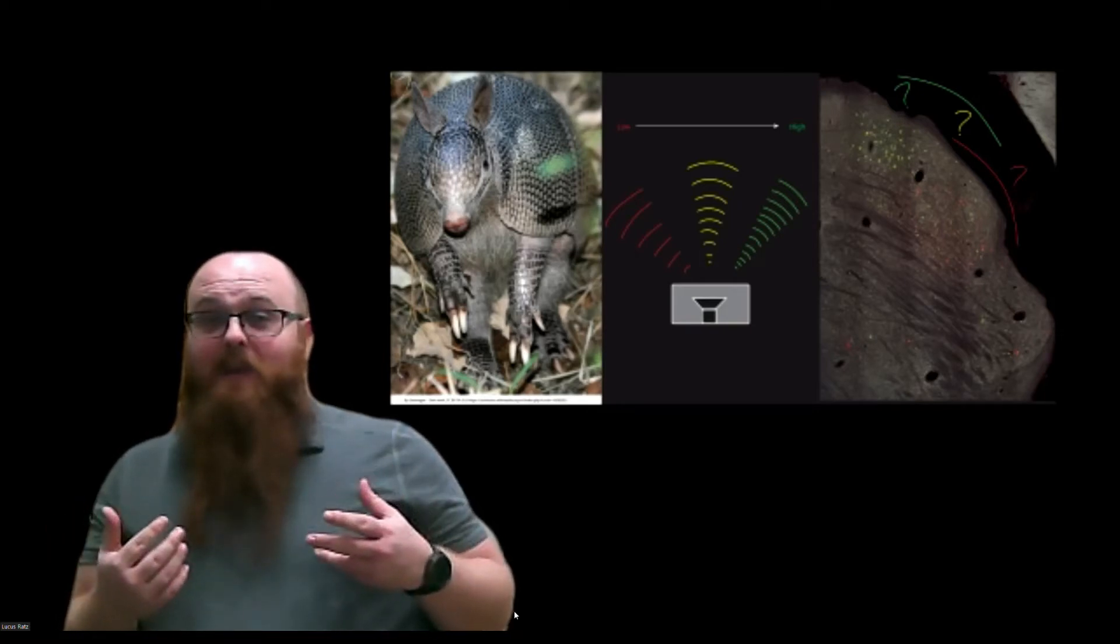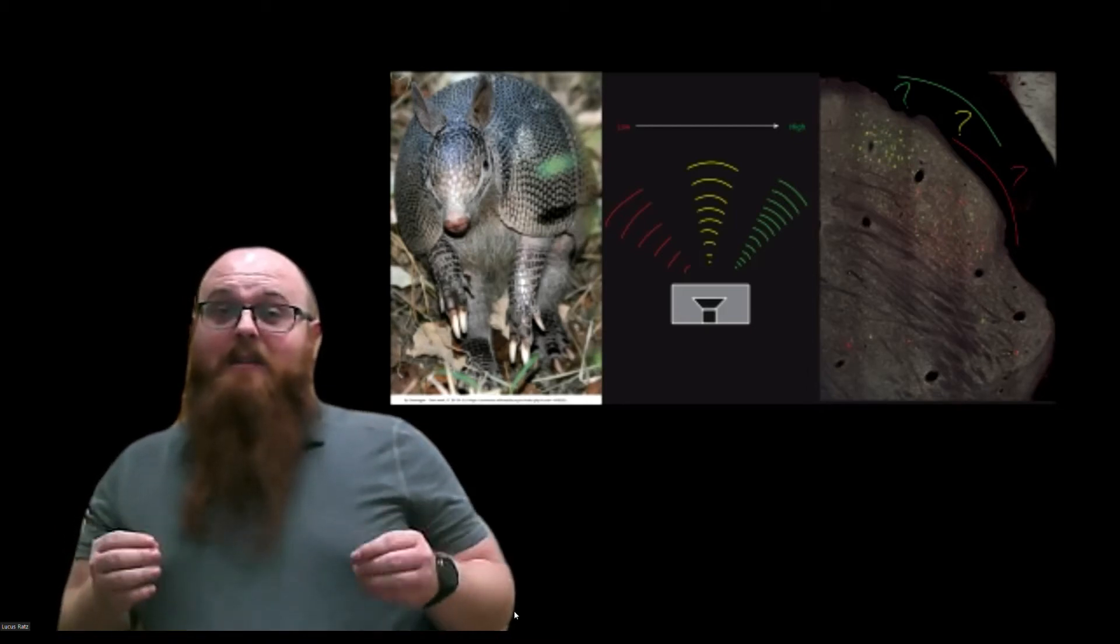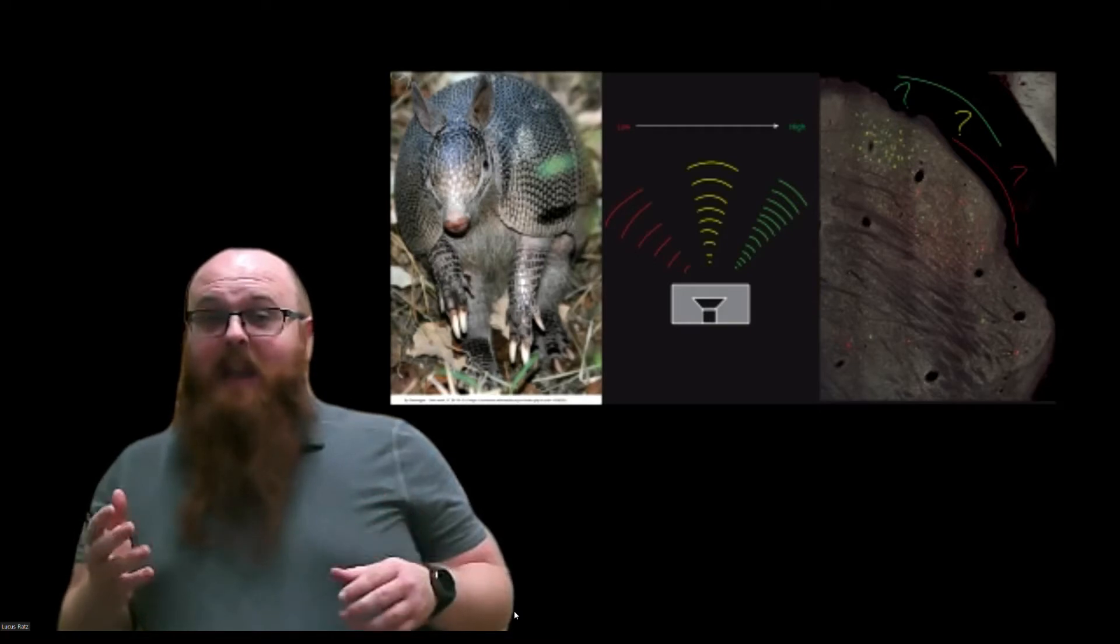I'm specifically working with the nine-banded armadillo because it's the only living species of Xenarthra in North America. Xenarthrans are a group of mammals with a wide array of highly specialized body shapes and behaviors that include the armadillos, sloths, and anteaters.